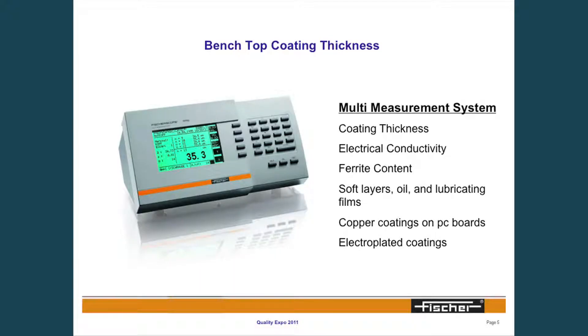There are different types of instrumentation available on the market. This product is unique in that it encompasses multiple test methods all within the same platform. So if people's applications change, they can get the specific test method associated with that application. For example, this product could come with magnetic induction and eddy current, but if you need beta-backscatter or conductivity measurement, you can get that test method incorporated in the same platform.